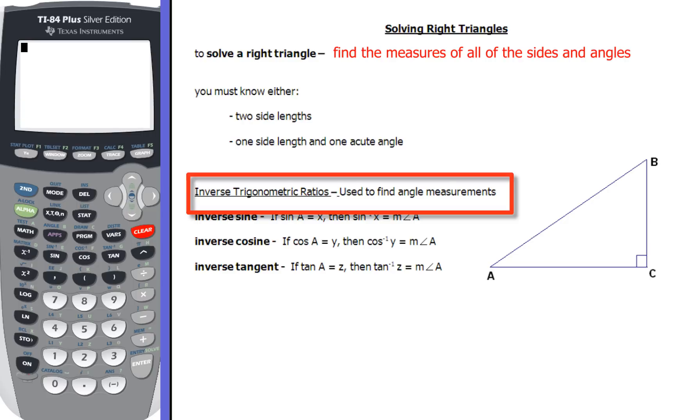Now, inverse trig ratios are used only when you want to find out how many degrees there are in an angle, which means you're going to have side data, and you're going to have information about two sides.